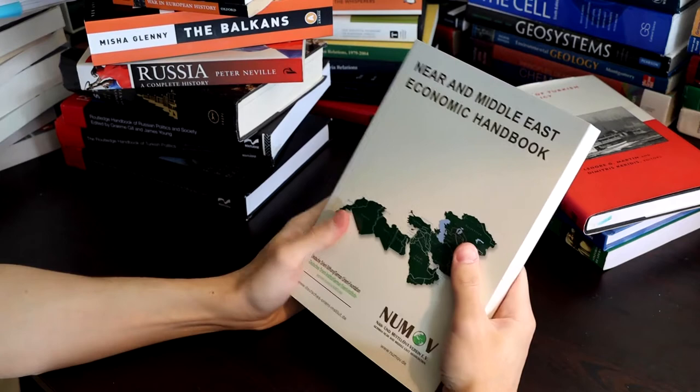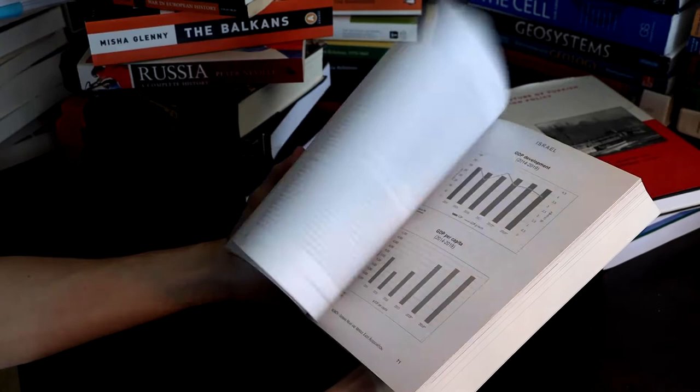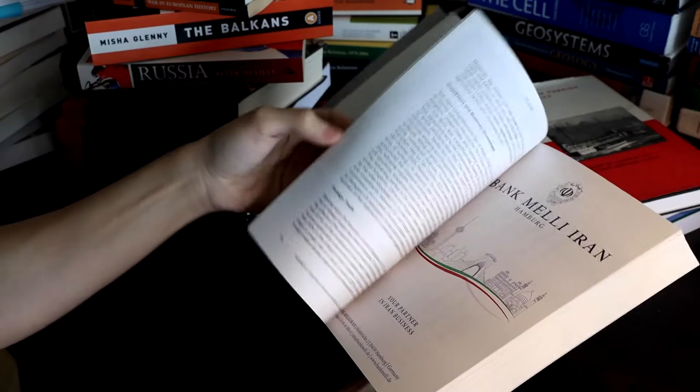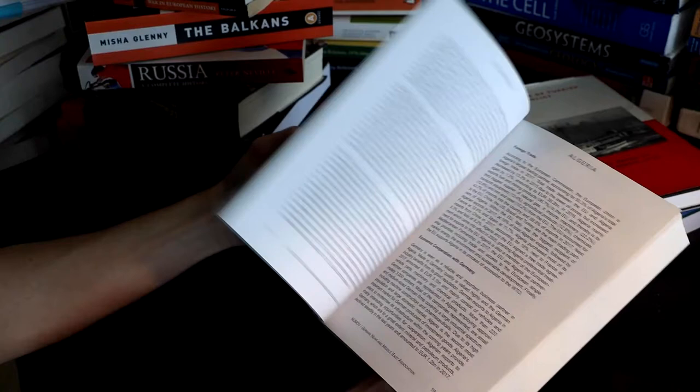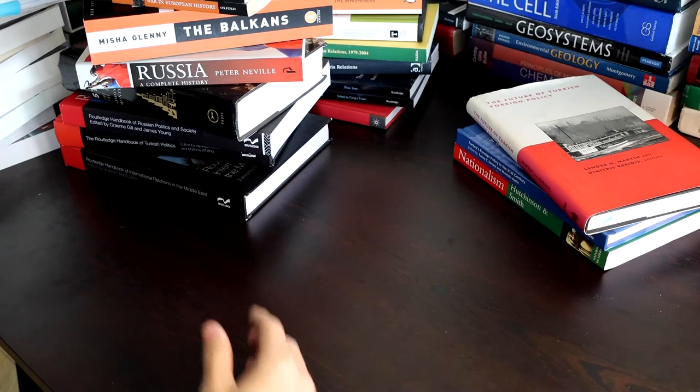Near and Middle East Economic Handbook. This is an expensive book. This is just basically data on economic development and the economies of Middle Eastern countries. It doesn't actually read like a linear book. You just find the country you want to read about and then it'll give you data on that country. It's more of a reference book than a book you're supposed to read through. But if you're a nerd on Middle Eastern politics and economics, then you're going to read through the whole book.